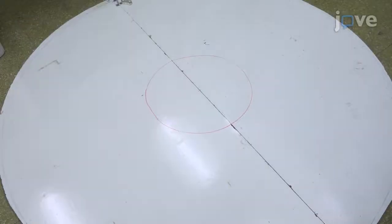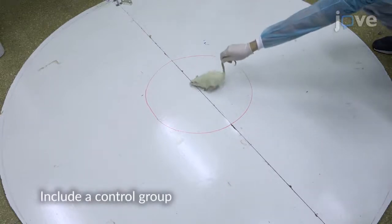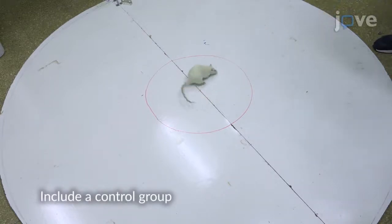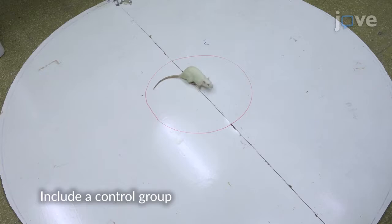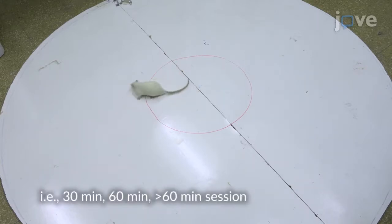To evaluate the neurological severity score after parasagittal fluid percussion injury, place the adult Sprague-Dawley rat at the center of a 50-centimeter diameter circle three times and monitor its ability to exit the circle.